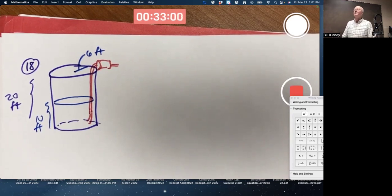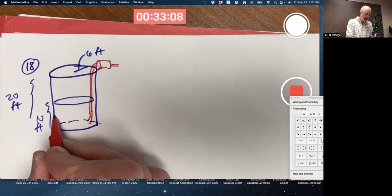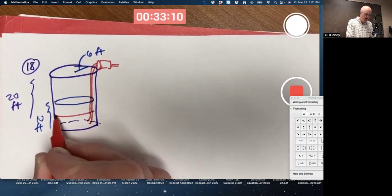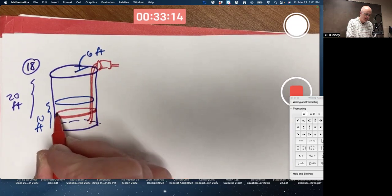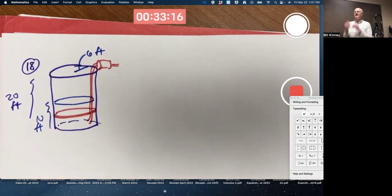What's the work done? Here's the method. I think it's a little bit mysterious why this method works. Figure out the work done to lift a thin slice of water up to the top. Add those up. Let delta y go to zero. Do an integral. Get the answer.